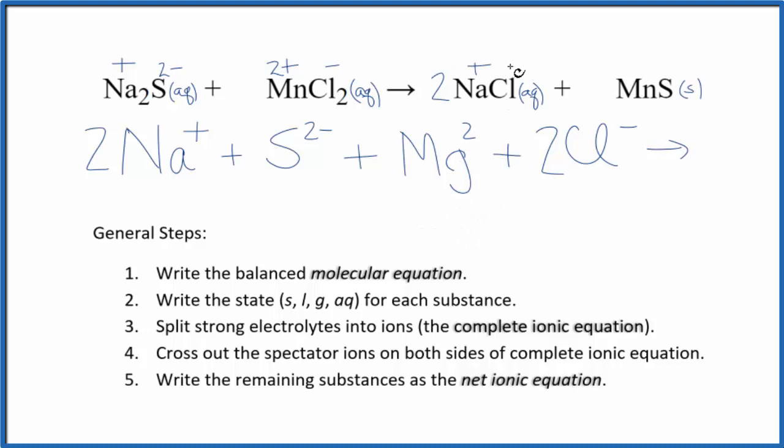In the products, we have the plus and the minus. So we have, again, 2 sodium ions. And the 2 goes to all the atoms here. So 2 chloride ions. And we don't split solids apart in net ionic equations, so we just have MnS. This is our complete ionic equation.